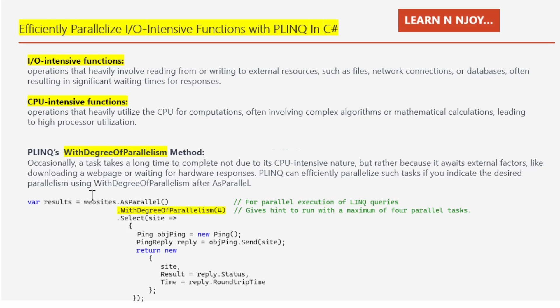PLINQ can efficiently parallelize such tasks if you indicate the desired parallelism using WithDegreeOfParallelism after each parallel method. Let's understand in a simple way. In the world of programming, some tasks are like speedy runners needing lightning fast execution to finish quickly, while others are more like marathon runners requiring patience and endurance to reach the finish.